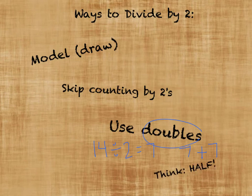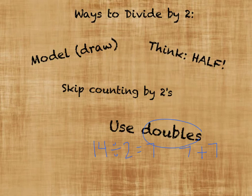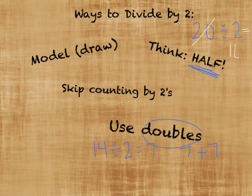Finally, think half. If I have a number and I'm dividing it by two, I'm really dividing it in half. So if I take twenty and divide it by two, I'm dividing twenty in half — that equals ten. Those are some ways you can divide by two. When you see a division problem with two, think of all these ways. Now it's your turn to try it!